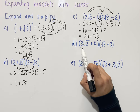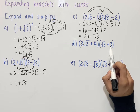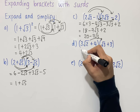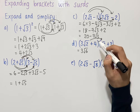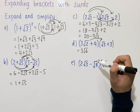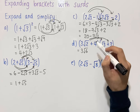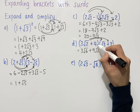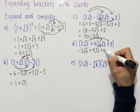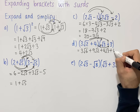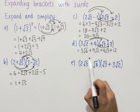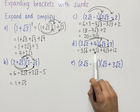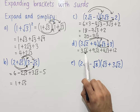The fourth question involves expanding 3 root 2 plus 4 with root 3 plus 3. Using the FOIL method: 3 root 2 times root 3 gives 3 root 6, since we multiply the numbers inside the square roots. Then 3 root 2 times 3 gives 9 root 2. Then 4 times root 3 is 4 root 3, and 4 times 3 is 12. We cannot collect like terms here as every term is already fully simplified, so this is our final answer.